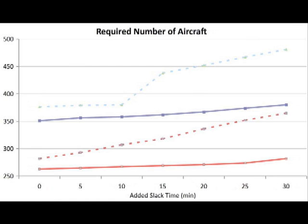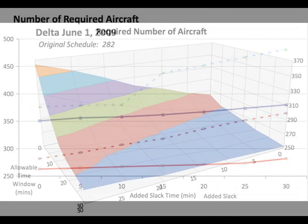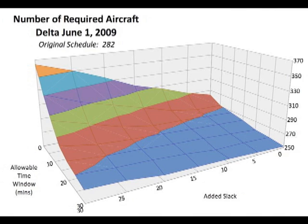Here's another interesting graph that we made. Not only did we see how slack time affected how many planes an airline would need, but we also looked at how big the time window was and seeing how that would affect how many airplanes would be needed, because maybe an airline isn't very flexible with how much time they're willing to reschedule their flight schedule.